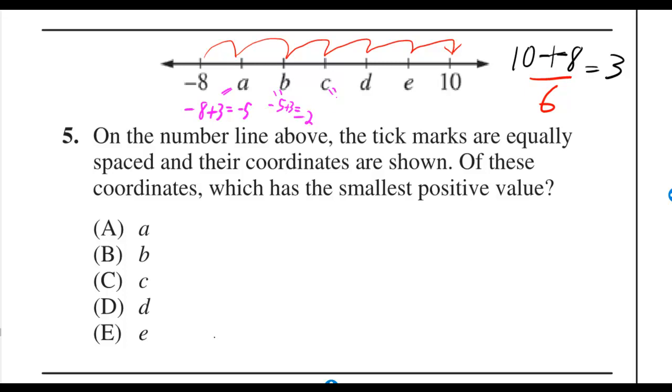That means c is negative 2 plus 3, which is 1, which is going to have to be the smallest positive value.